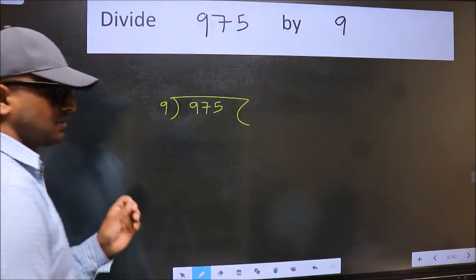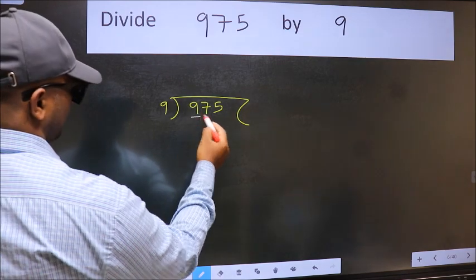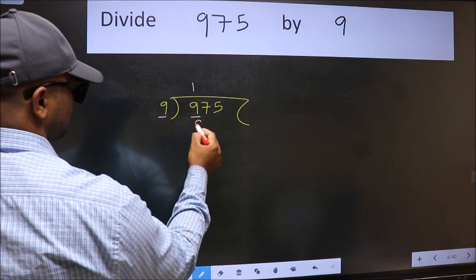This is your step 1. Next, here we have 9 and here 9. When do we get 9 in 9 table? 9 once, 9.